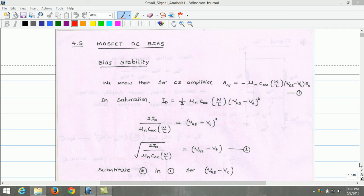Before we arrive at various biasing methods, let us discuss bias stability. We know that for the transistor common source amplifier, the voltage gain AV is given by minus mu n COx times W by L into VGS minus VT times RD.